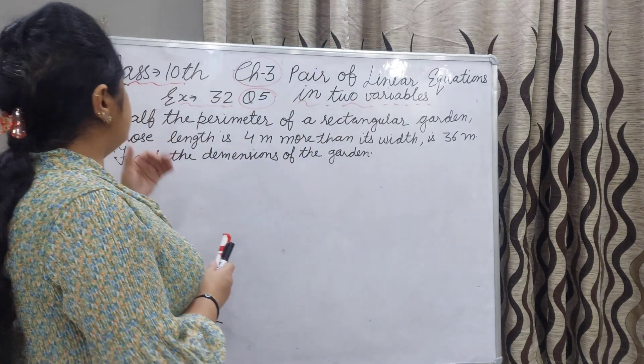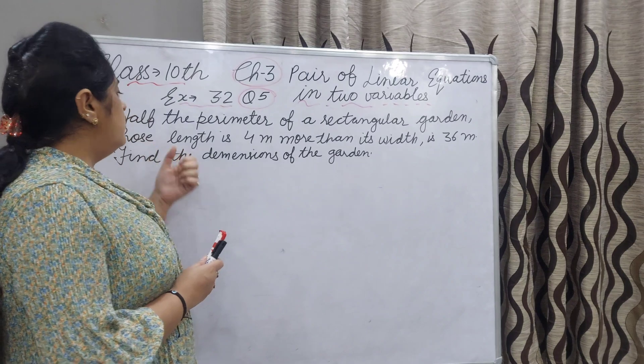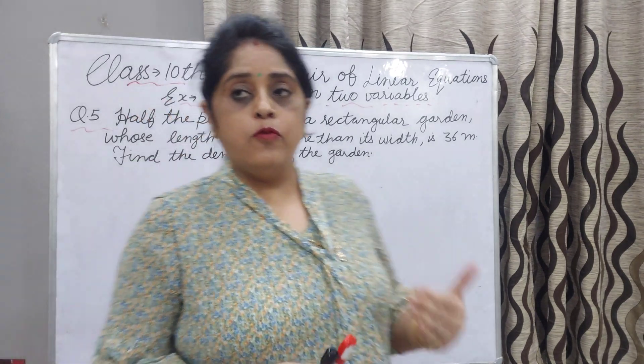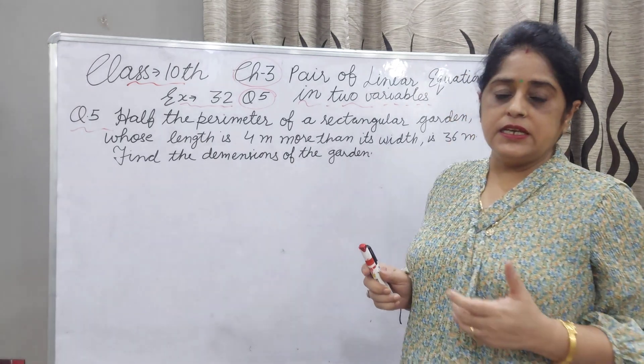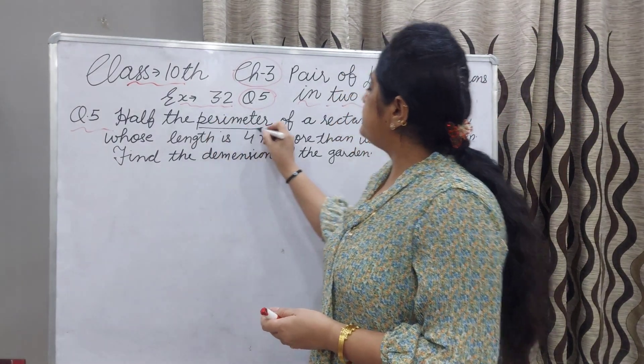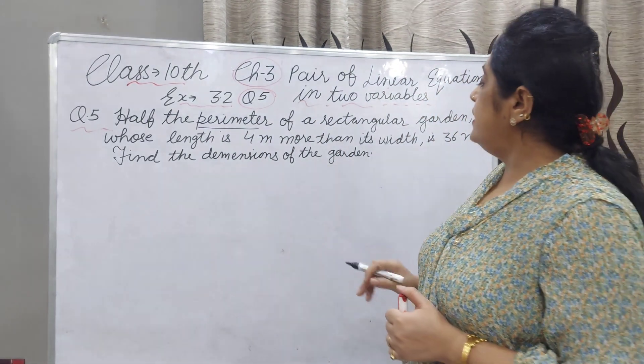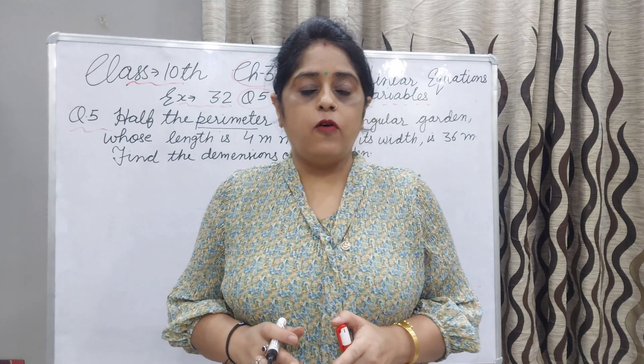The statement is: half of the perimeter of a rectangular garden whose length is 4 meters more than its width is 36 meters. What is 36? 36 is half the perimeter. Find the dimensions of the garden - you have to tell the length and breadth of the garden.